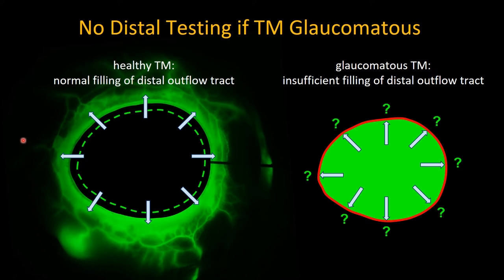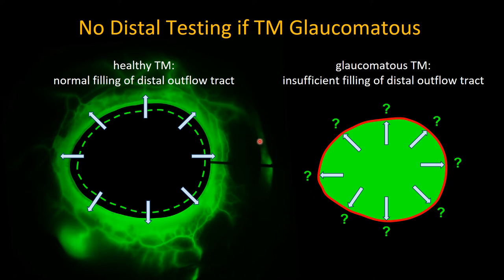An even bigger problem: if you had a dye that you could inject into a patient's anterior chamber to see whether there is flow or none, you could not distinguish between an outflow barrier at the level of the trabecular meshwork versus at the distal outflow side. If there is no outflow problem at the trabecular meshwork level, fluorescein should flow into the distal outflow system and you could see all the vessels participating in conventional outflow.